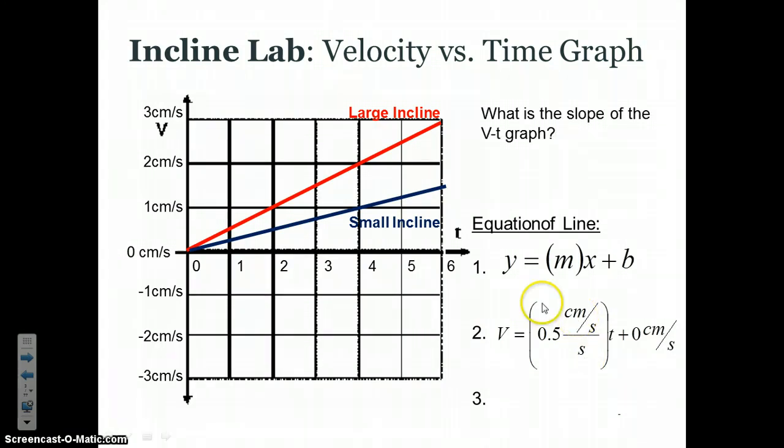We discussed the fact that this number tells you how much your velocity increases each second. Like we just talked about, for the red line, it's moving, it's getting faster by a half a centimeter per second every second that the spinner is moving.